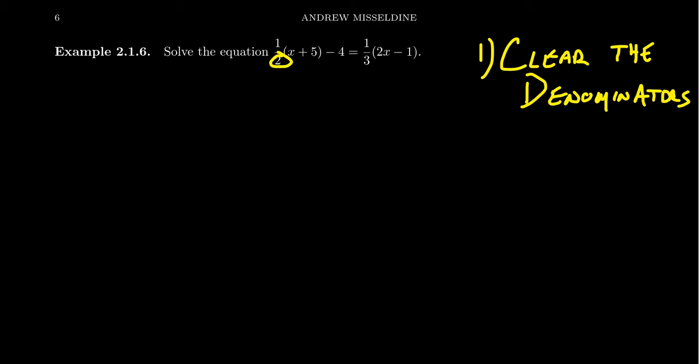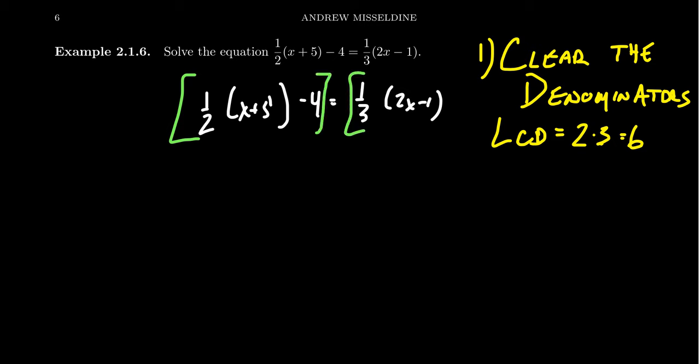Clear the denominators. We're going to first identify the denominators in presence. We have a one half, we have a one third. We want to identify the least common denominator, the least common multiple of the denominators present. In this situation, two times three equals six. So we're going to take our equation, 1/2(x+5) - 4 = 1/3(2x-1), and multiply both sides by the least common denominator, six.